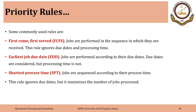We will discuss three simple priority rules, and the fourth is a derivative of these. The first rule is First Come First Serve: jobs are performed in the sequence in which they are received; this rule ignores due date and processing time. The second rule is Earliest Job Due Date first: jobs are performed according to their due dates; due dates are considered, but processing time is not. The third is Shortest Processing Time, or SPT: jobs are sequenced according to processing time; this rule ignores due dates but maximizes the number of jobs processed.